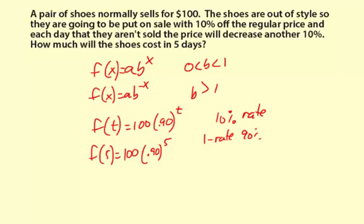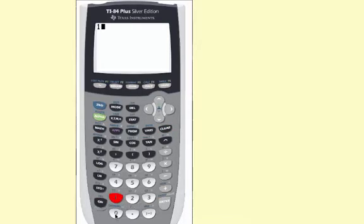Let's get a calculator. Okay, I have $59 and 0.049. So I'll put 59.05.